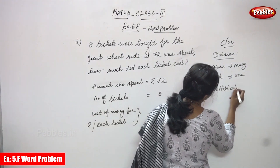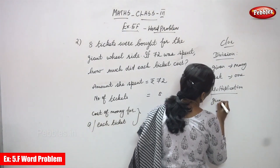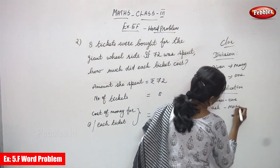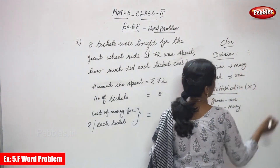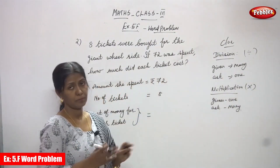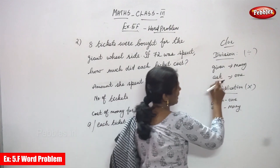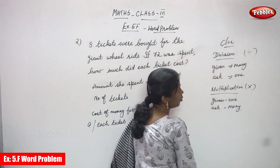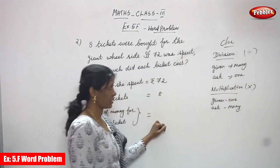For multiplication: given one, asked for many — that is multiplication. Division sign and multiplication sign — these are the clues for division and multiplication. The difference is: given many and ask one is division; given one and ask many is multiplication. I'll repeat: division clue — given many and ask one; multiplication clue — given one and ask many.